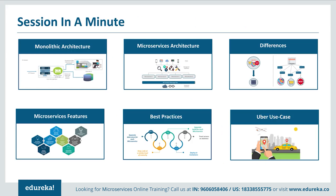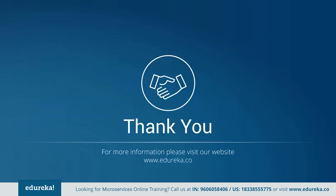To give a quick summary: we started with understanding monolithic architecture and its challenges. Then we went through the microservice architecture and understood the differences between both. After understanding the architectures, we focused on the features of microservices and discussed best practices to design them. Then we compared Uber's previous framework to the present one and understood what made them change their architecture. Thank you for watching this video and have a great day!